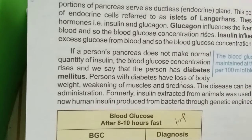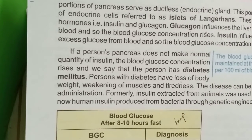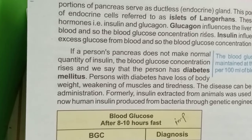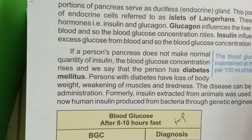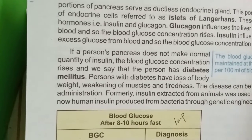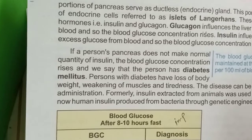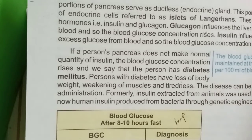Glucagon affects the liver, causing glucose to be released. In this way, the level of glucose increases in the blood — this is its concentration effect.